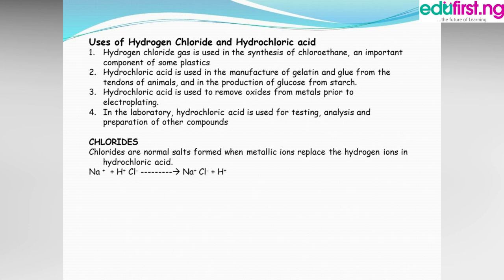Chlorides are salts formed when metallic ions replace the hydrogen ion in hydrochloric acid. For example, sodium ions replace hydrogen in HCl — which dissociates into hydrogen ions and chloride ions — to give sodium chloride. Any metal can replace the hydrogen ion: calcium gives calcium chloride, zinc gives zinc chloride, and so on. These products are what we know as chlorides.